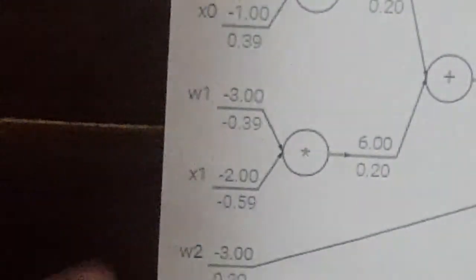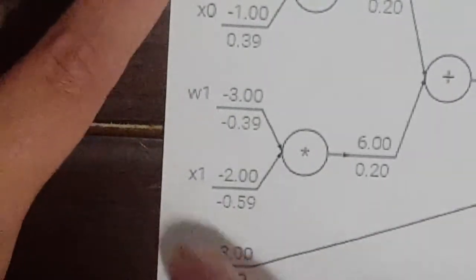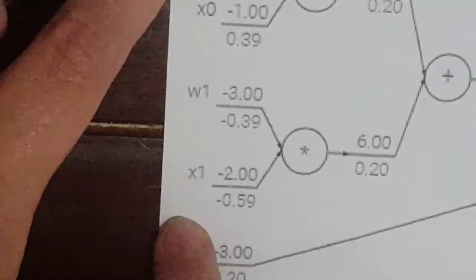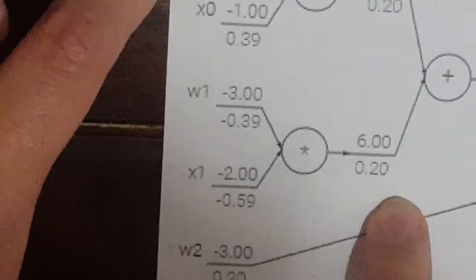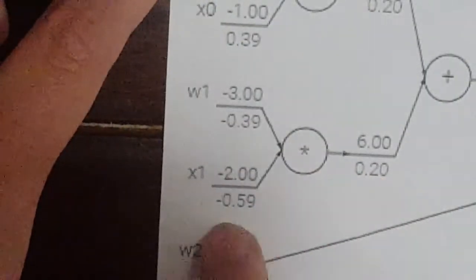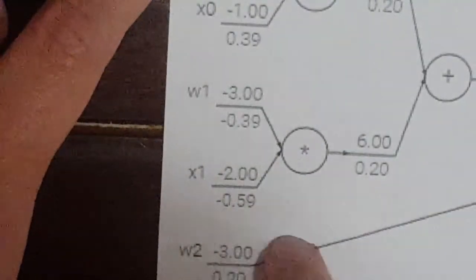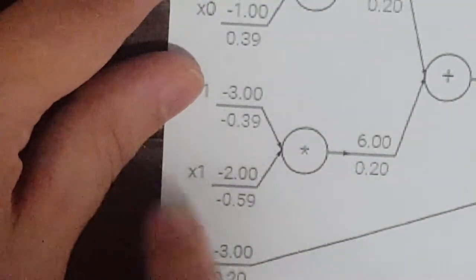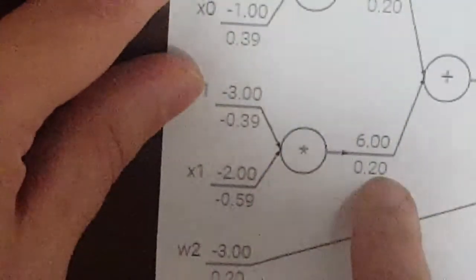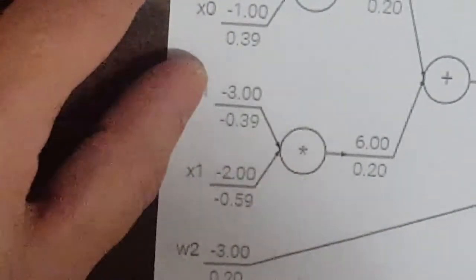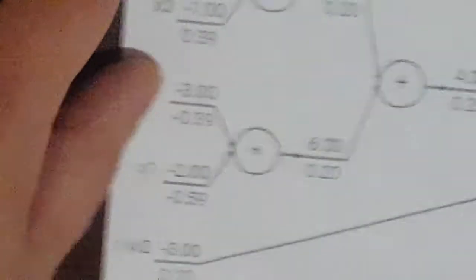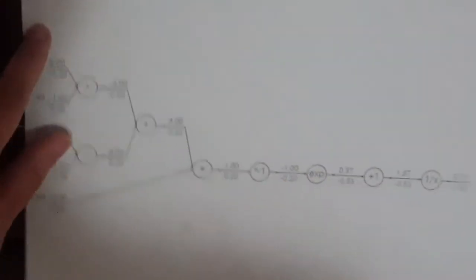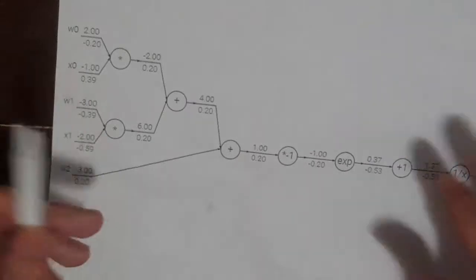Now we do the same for x times weight 1. The derivative with respect to x is weight 1, so we get -3 times our previous derivative 0.2, giving us 0.6 — shown as 0.59 due to rounding. Now the partial derivative with respect to weight 1 is x1, so we get -2 multiplied by our previous derivative, giving -0.4.